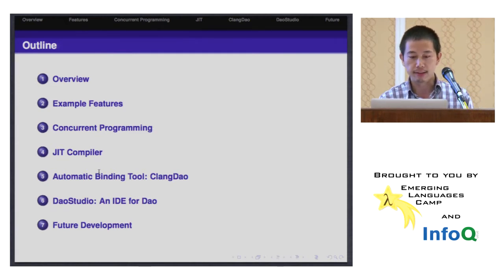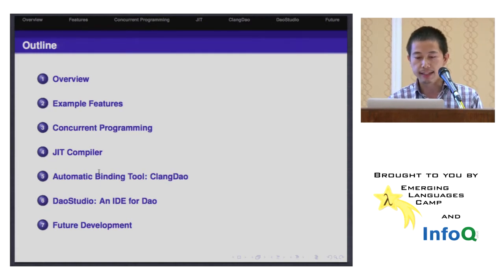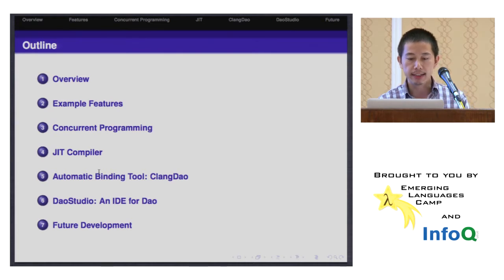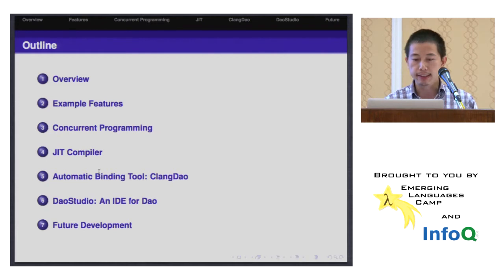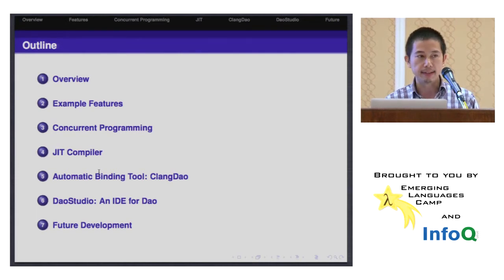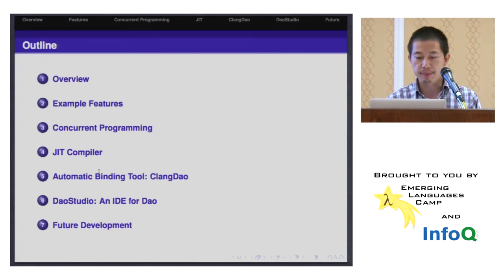I will also speak about the JIT compiler, which is based on LLVM. I will also mention a tool I developed based on Clang, which can generate the bindings from C++ library header files automatically. I will also show a screenshot of an IDE I developed for DAO, and then mention some future development plans.